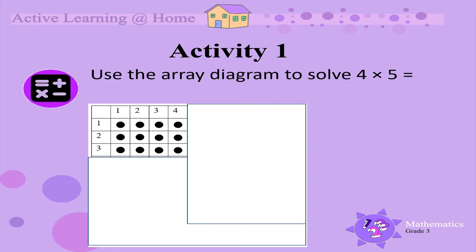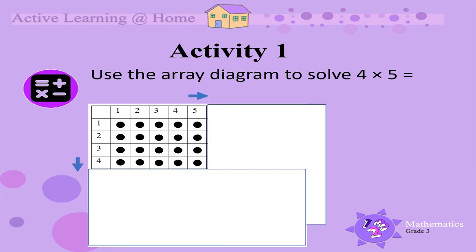Let's do another multiplication. Use the same array diagram to solve 4 times 5 equals. You need to move the first piece of paper down by 1 to show 4 and the second piece of paper, move it across by 1 to show 5.